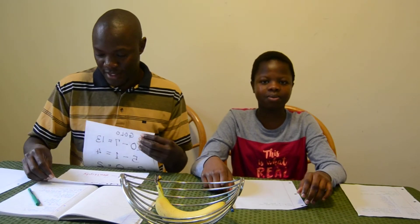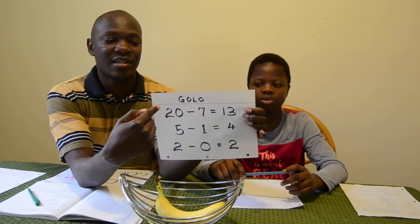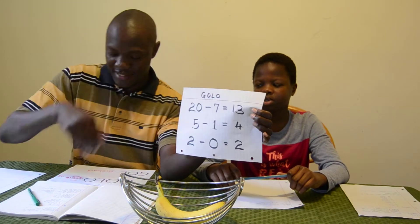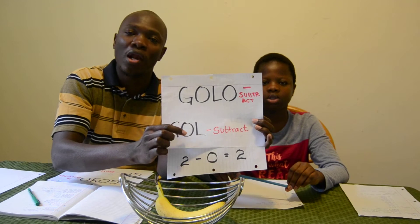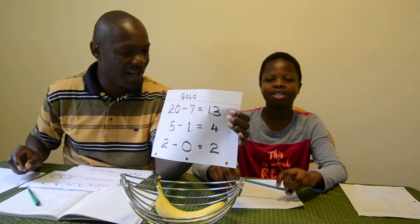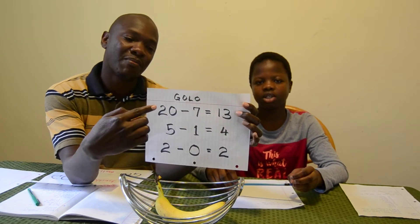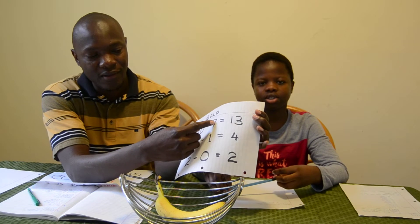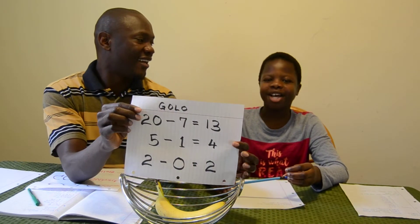Today we are going to talk about subtraction, multiplication, and division. When you subtract in English you say 'subtract seven from twenty' — same thing in Luo. The word for subtraction is 'gol gol,' so the action is 'gol gol.' Seven subtracted from twenty — 'gol gol' — and what will you get? 'Apar gi adek.'